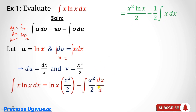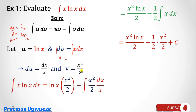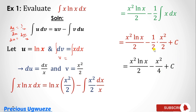After multiplying, x cancels one power of x leaving just x, and the factor of 1/2 comes out of the integral. Integrating x gives x²/2. Multiplying 1/2 by x²/2 gives x²/4. So the final solution is: (x²/2)·ln(x) − x²/4 + C.